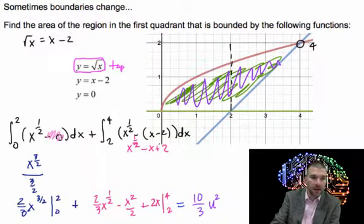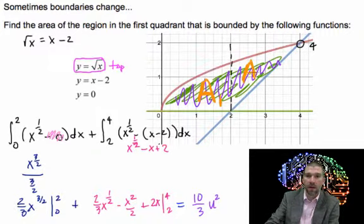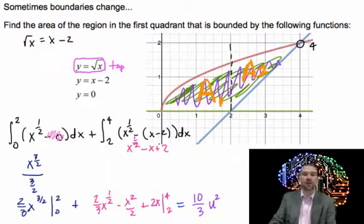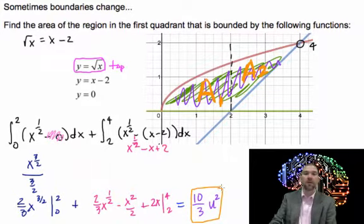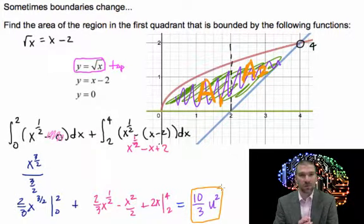We're adding the area of the first space, A1, plus the area of the second space, A2, to get 10/3 total. You should get 10/3 — double-check by using your calculator and seeing if 10 divided by 3 gives you the same decimal answer.